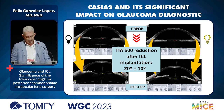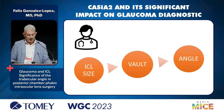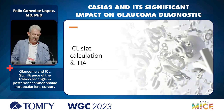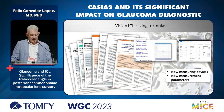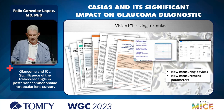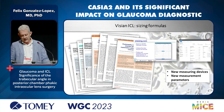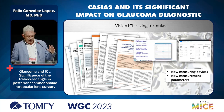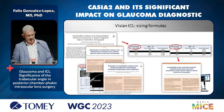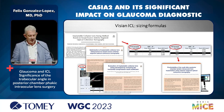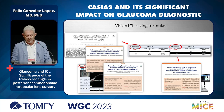So ICLs have a relationship with the vault and with the angle. In the ICL sizing formula literature, many new formulas are published every year, based on new measuring devices and parameters — the CASIA 2 has its own ICL sizing application. We have the Nakamura formula and the Shimizu-Kimiya formula, both from Japan. The Nakamura formula is based on traditional biometric parameters of the anterior segment.